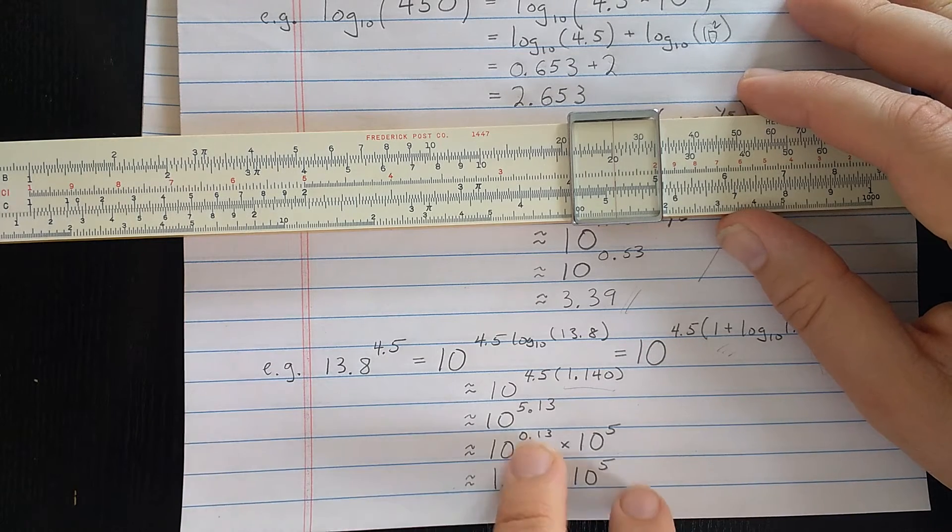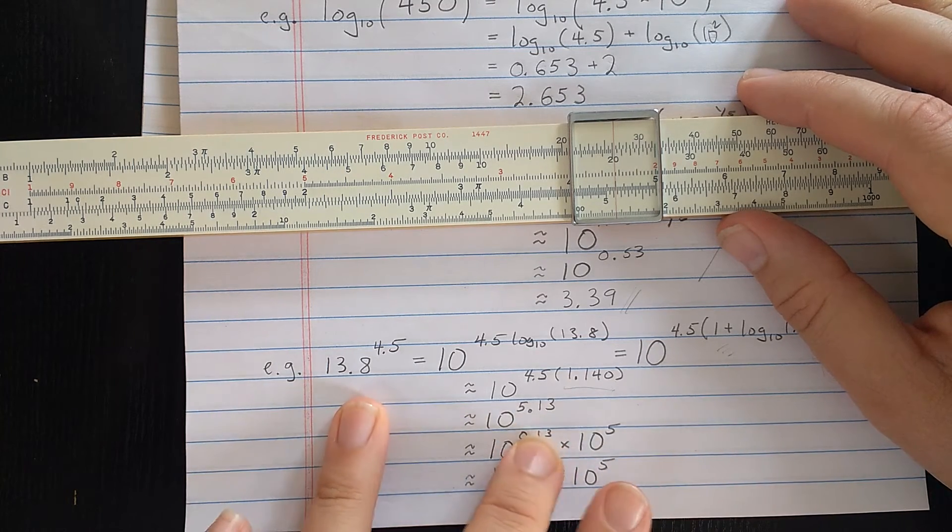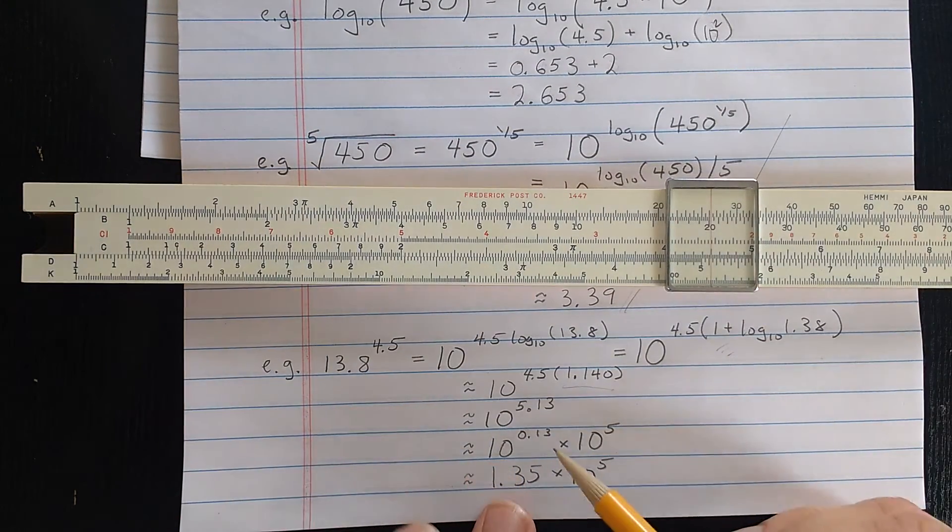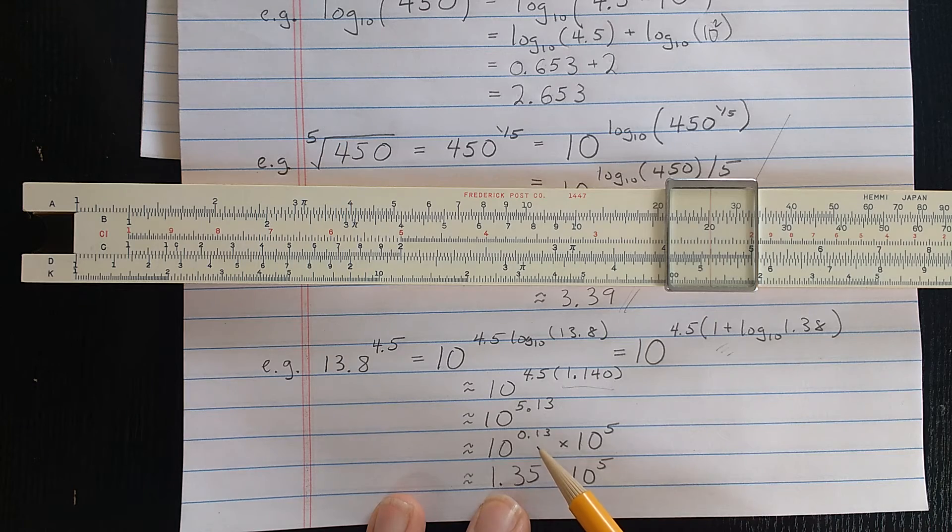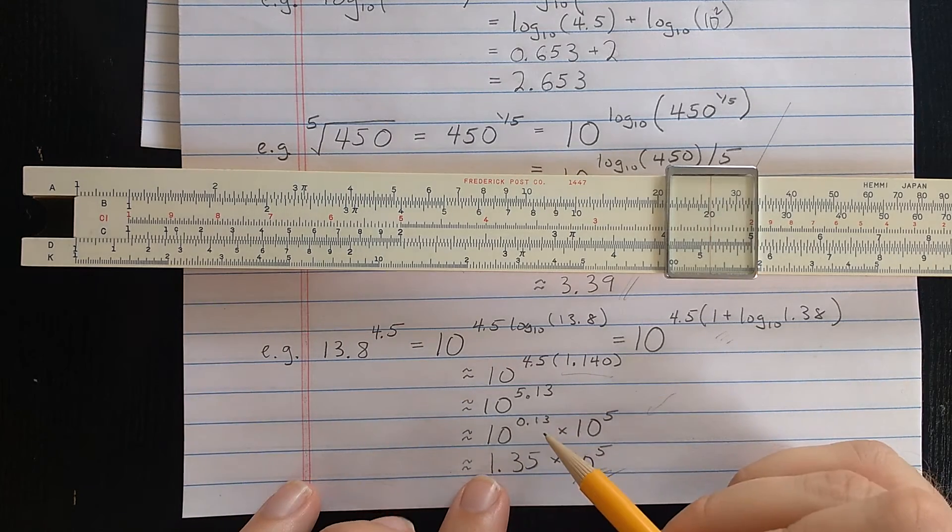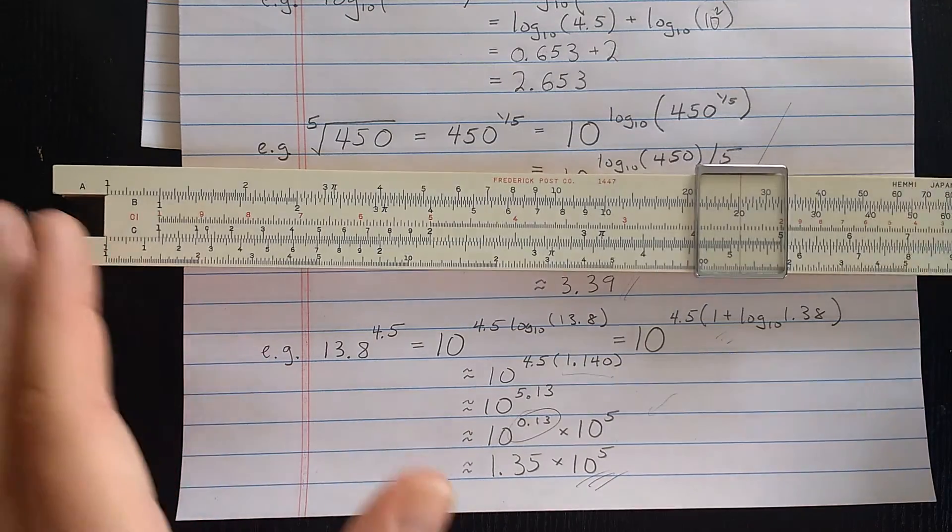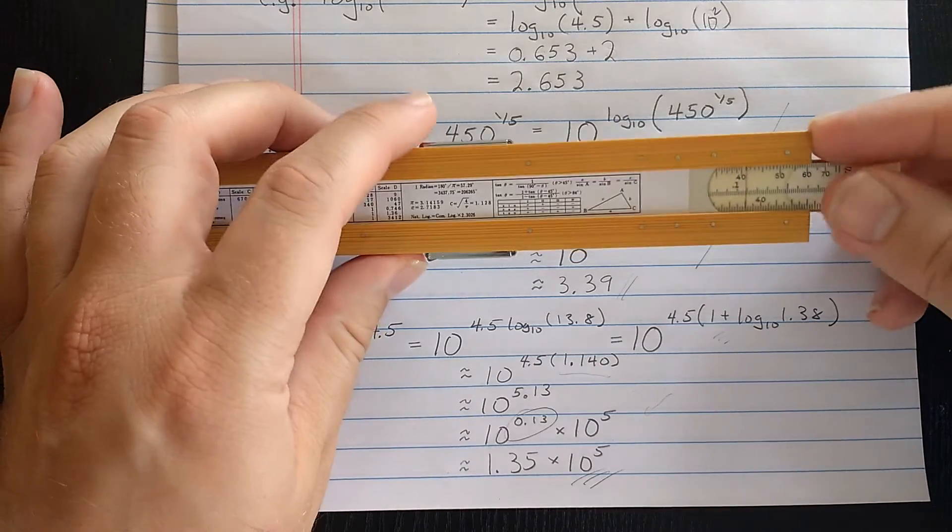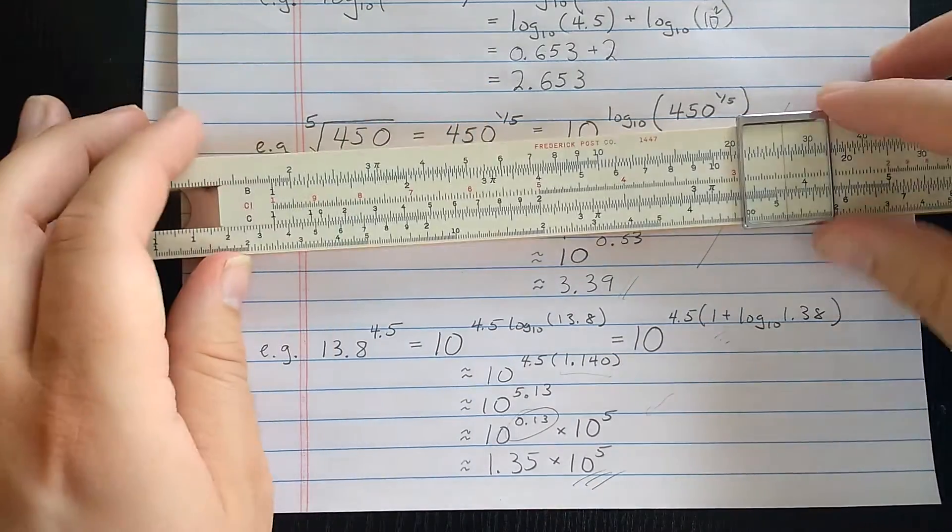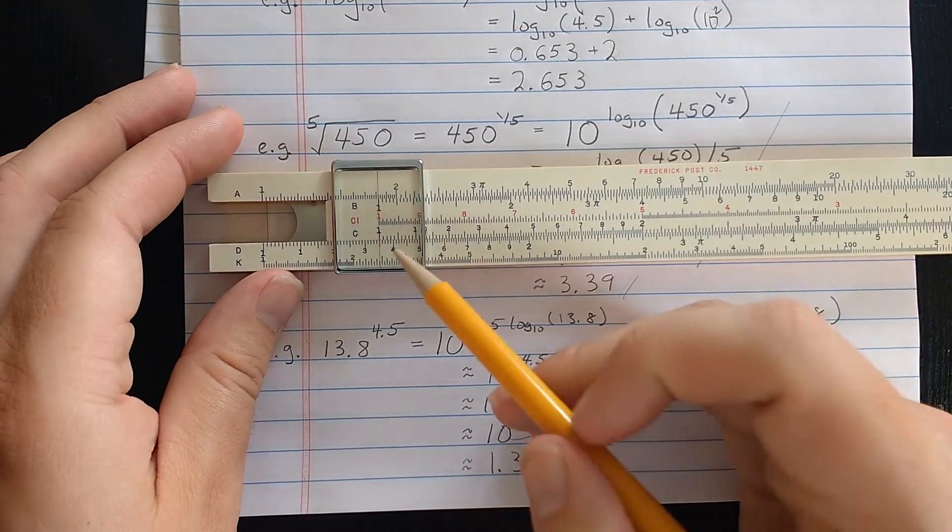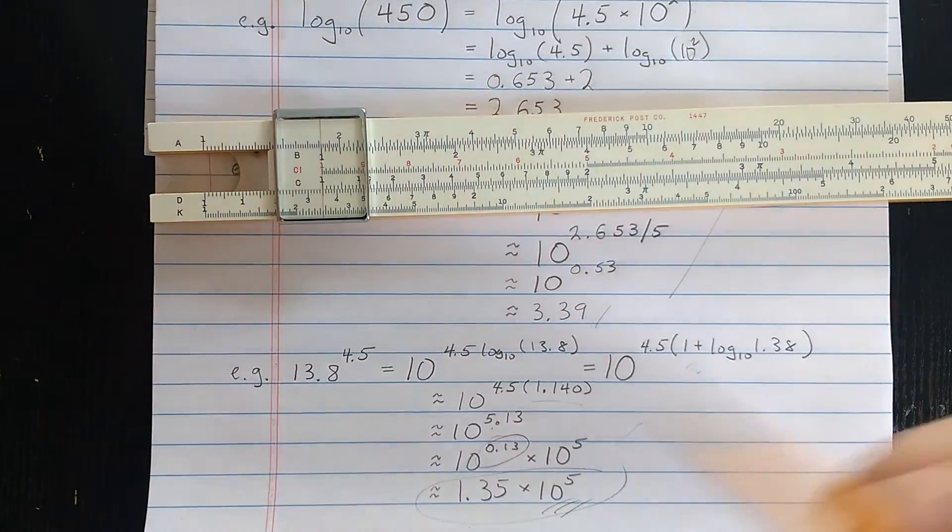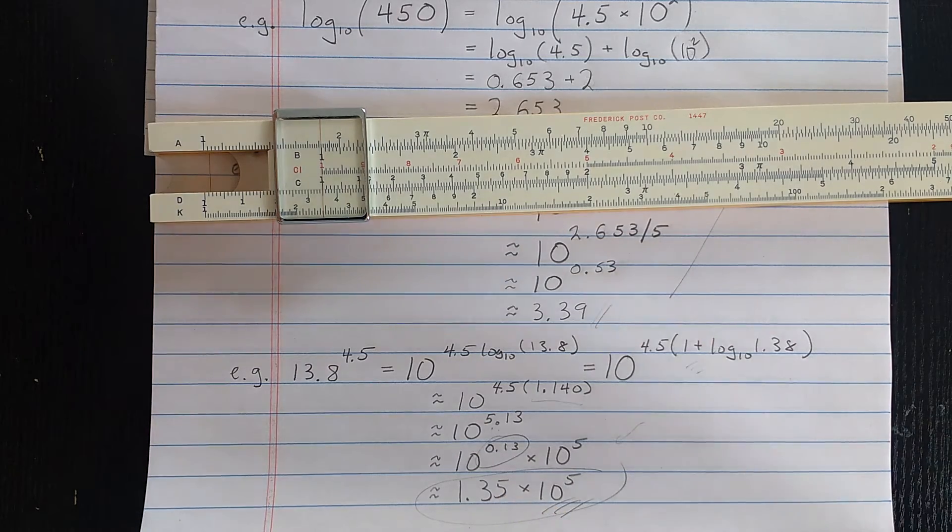Now, I have 10 to the 5.13 is the same as this. I've essentially done a change of base here, right? But exponents with base 10 I can compute using the L scale. How do I do that? Well, I separate this into 10 to the 0.13 times 10 to the 5th, kind of going back into scientific notation. I'm going to leave that 10 to the 5th in the end. But this 10 to the 0.13, this number now between 0 and 1, can be computed using the L scale. So let's find that. 0.1, 1, 2, 3. 0.13 on the L scale. I flip. I find the index. And what I'm reading there at the index is 1.35. So final result here is that 13.8 to the 4.5 is 1.35 times 10 to the 5th.